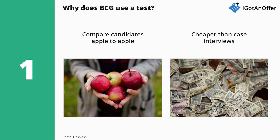Second, it's a cost-effective way to gather objective information about a candidate. In other words, administering a test is cheaper than having partners of the firm interview a large number of candidates. This is probably also one of the reasons that BCG uses a reasoning test as one of the first steps in its recruiting process. Now you know why BCG uses the potential test, let's turn our attention to the format of this test.